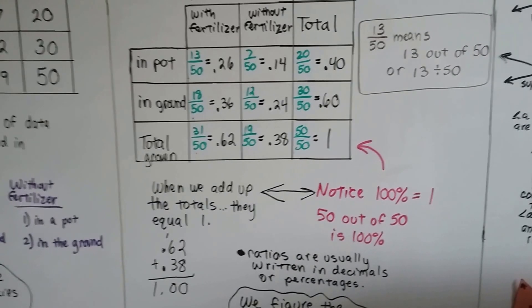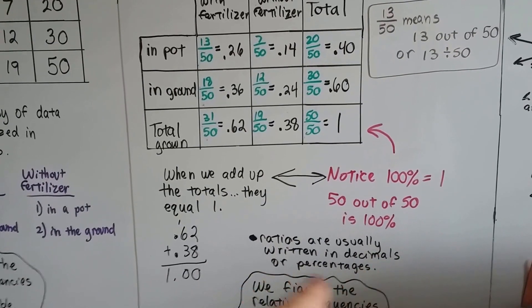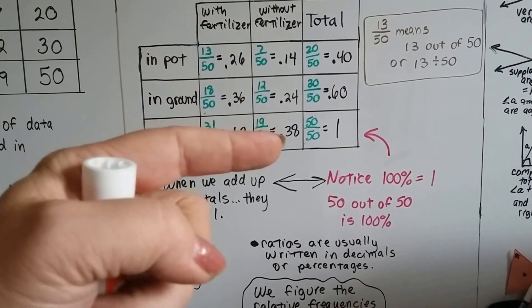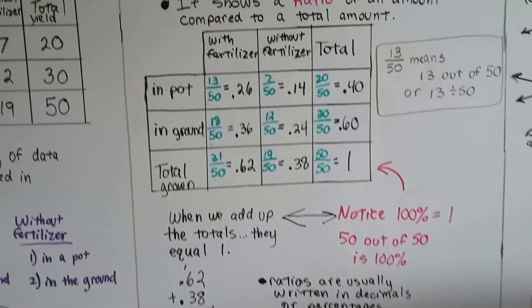See that? We didn't write 50 here. 50 out of 50 is 1. That's 100%. When we add the totals, they equal 1. 0.62, 0.38, it equals 1.00.